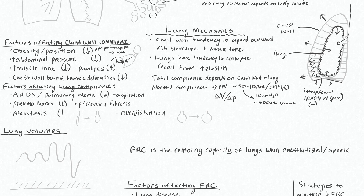Another word for alveolar collapse is atelectasis, so in general anything that causes alveolar collapse or atelectasis will decrease your lung compliance because it's more difficult to expand from a collapsed position. It's also hard to expand alveoli from an already over-distended position — over-distension will also decrease your compliance, just like going from an almost fully inflated balloon to slightly more inflated requires a lot of pressure. Lastly, someone known to have pulmonary fibrosis can be expected to have decreased lung compliance and will require higher pressures to get good volumes.